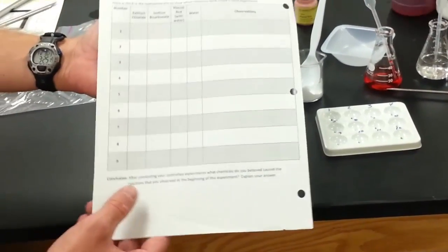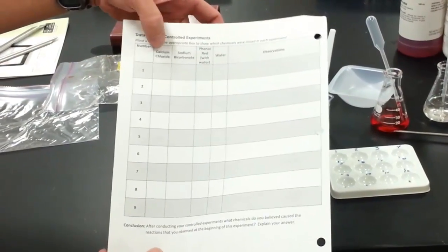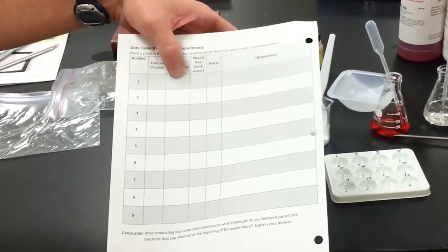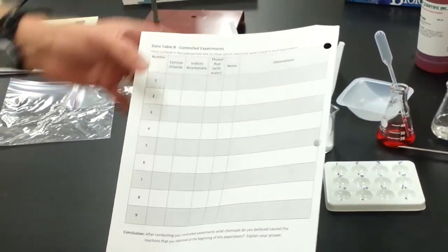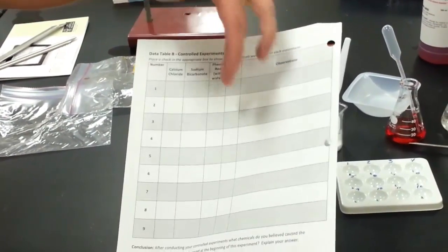My recommendation for the experiment is to maybe start with calcium chloride and mix it with sodium bicarbonate, and see what happens. Once that particular combination is done, try calcium chloride in the second experiment with the phenol red and water, and write your observations down.